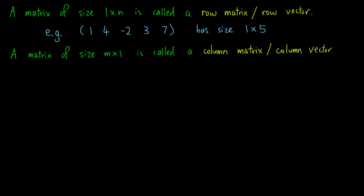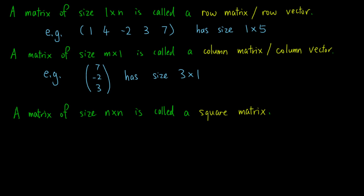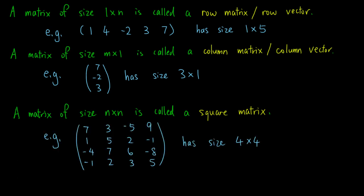The second type is a matrix of size m by 1, and it is called a column matrix or column vector, because it has only one column. For example, the matrix with entries 7, negative 2, and 3, arranged as a column, is a column matrix of size 3 by 1. The third type is a matrix where the number of rows equals the number of columns, so it has size n by n. It is called a square matrix. For example, this matrix has size 4 by 4.